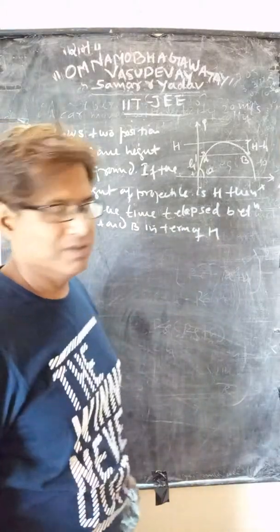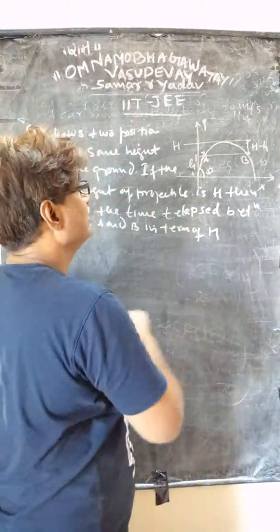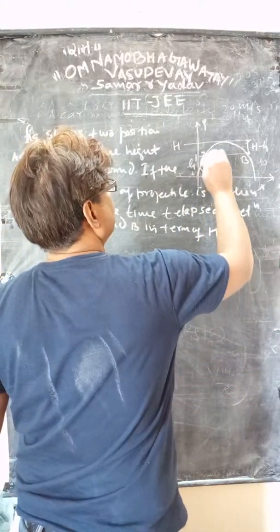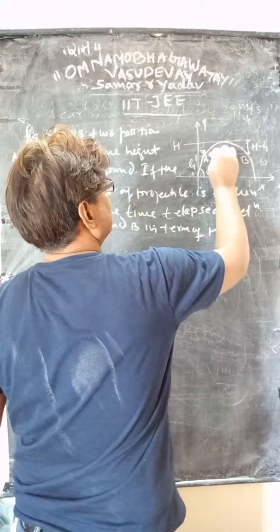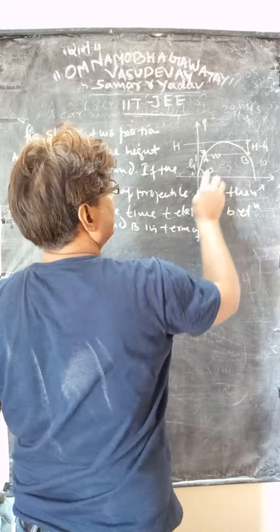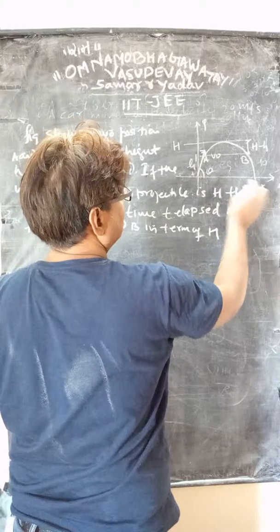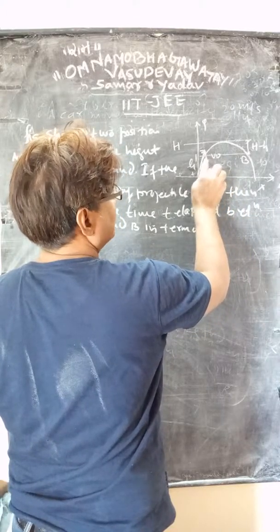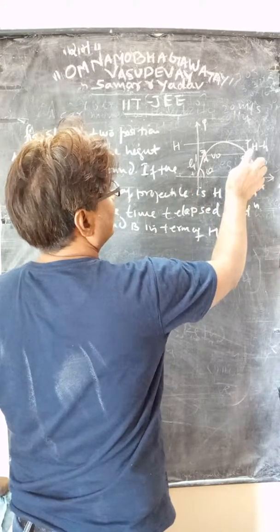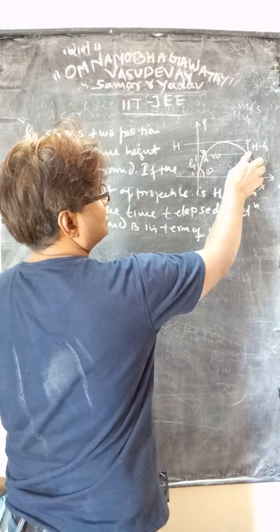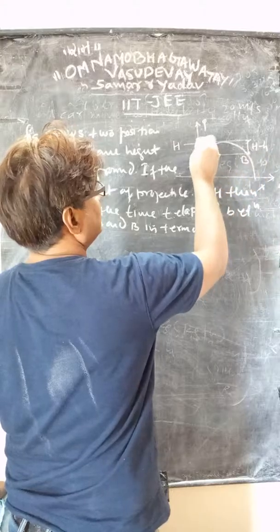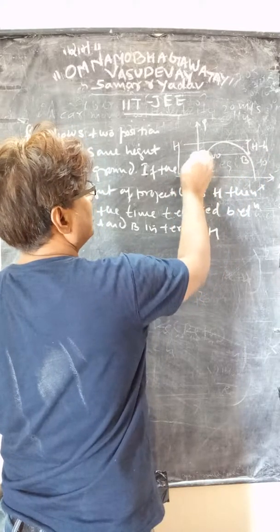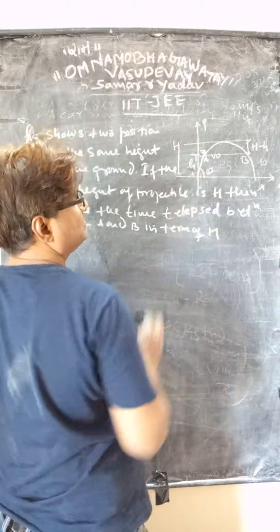As you can see in the figure, the projectile is projected with initial velocity V0 making angle theta with the x-axis. There are two positions A and B. The total height is capital H and the height of A and B above the ground is small h.